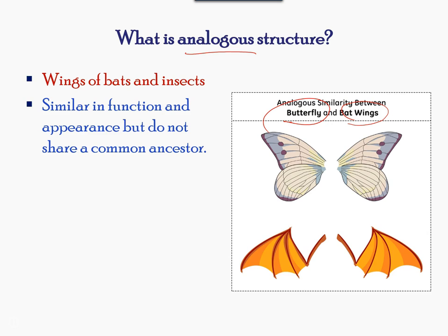Wings are popular adaptations for many animals. Bats, birds, and insects all have wings. However, a bat is more closely related to a human than to a bird or an insect. Even though all these species have wings and they can fly, they vary greatly in many other ways.